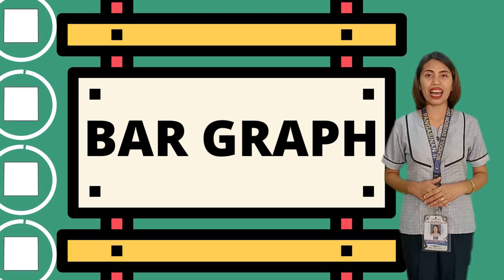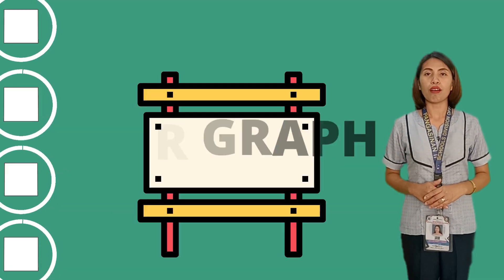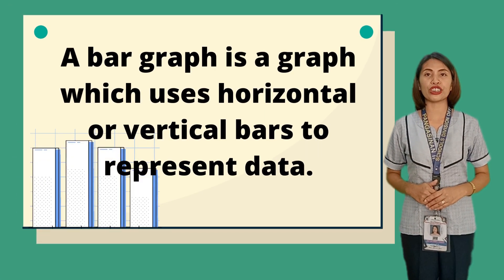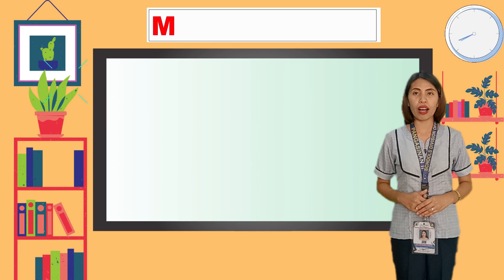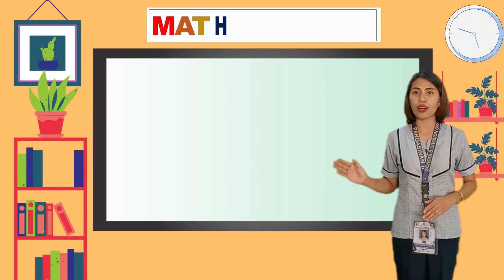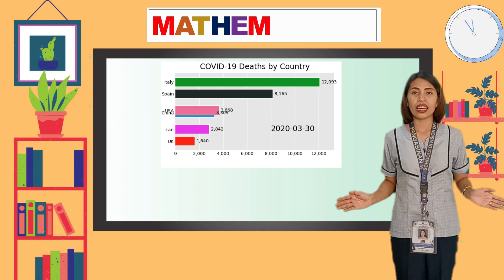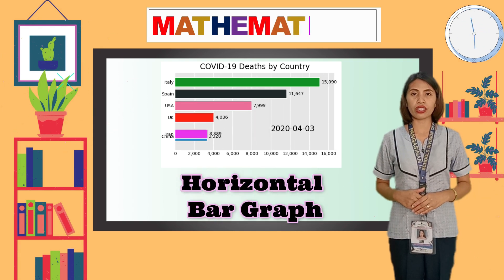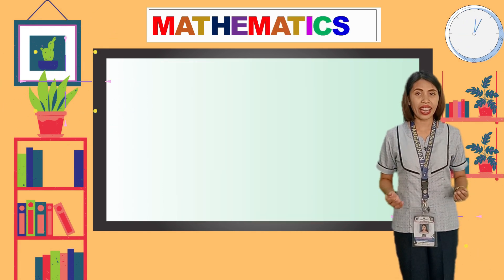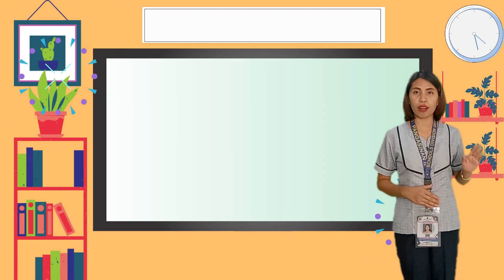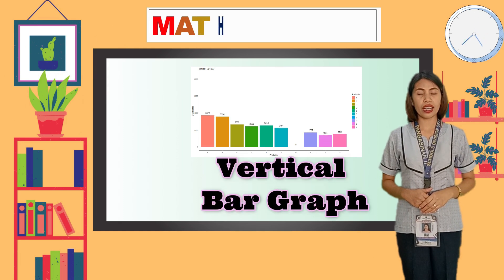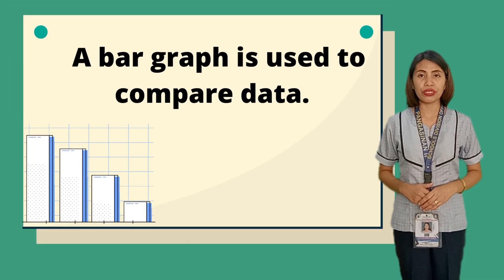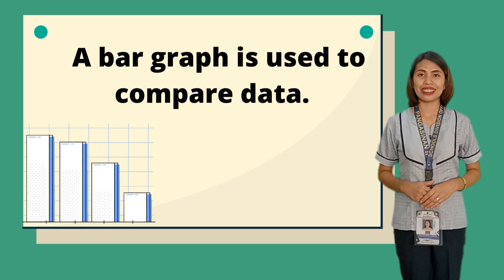Let us now proceed to the next type. The second type of presenting data is a bar graph. A bar graph uses horizontal or vertical bars to represent data. When bars extend from left to right, it is called a horizontal bar graph. When bars extend from bottom to top, it is called a vertical bar graph. A bar graph is used to compare data.